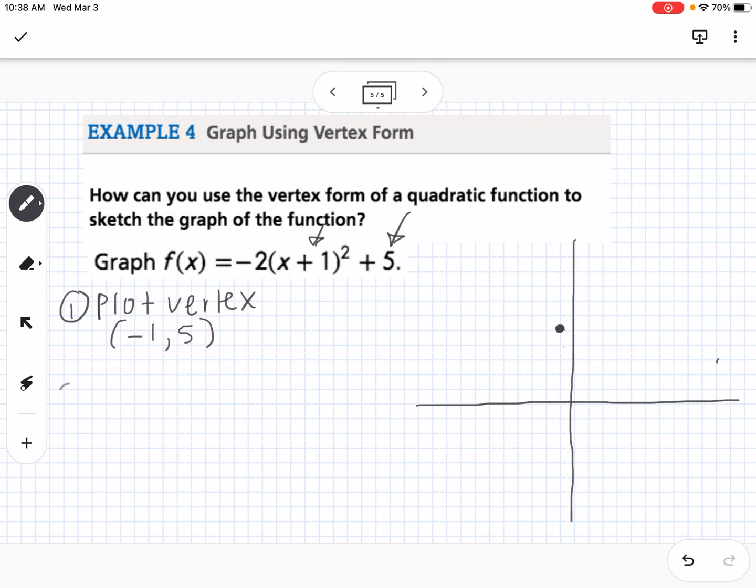Step 2 is we're going to make a table, and we're going to use symmetry. Step 3 is use symmetry. So if you find, since we know that the vertex is on our axis of symmetry, so I'm going to kind of sketch a dotted line there, we know that if we find a point to the right, we can find that same point to the left in the same distance away. So if I make a table here, I'm going to put my, so I know that the point (1, 5), (-1, 5) is on my graph.